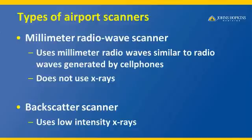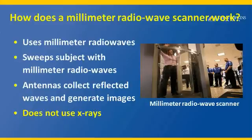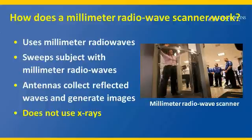One is the millimeter radio wave scanner, which uses millimeter radio waves similar to those generated by cell phones and does not use X-rays. This millimeter radio wave scanner appears like a telephone booth. Travelers are asked to stand inside the booth, where an antenna sweeps around them, showering them with millimeter radio waves. Another antenna collects the reflected waves to create an image. These scanners do not use X-rays.